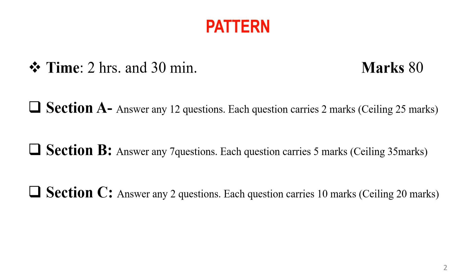In Section C, that is the essay type question. There will be four questions and you have to answer any two questions. Each question carries 10 marks and there will be a ceiling of 20 marks. The total will be 80 marks. Now we can go to each section and the questions of each section in this model question.